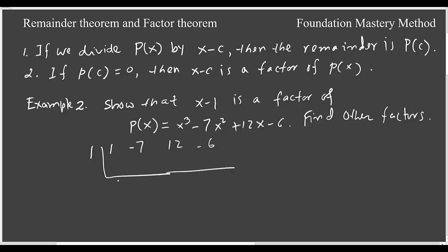As usual, we will pull 1 here, multiply, add them, multiply, add them again, multiply, add them. So as expected, the remainder is 0. That's why x - 1 is a factor. Now what we end up with: this is cubic and we are dividing by linear, so my quotient will be second degree. So then you have x² - 6x + 6.